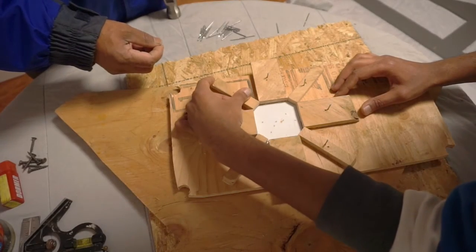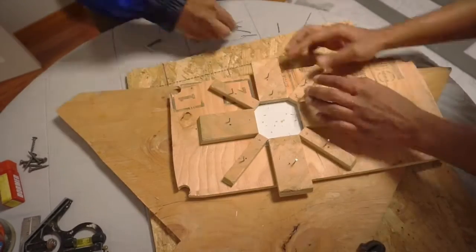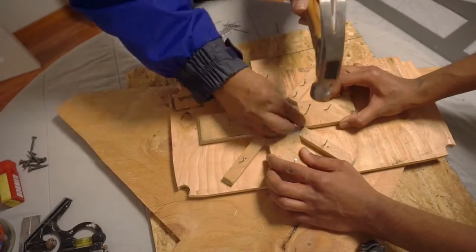We're going to nail down each strip with two nails to make sure the strip is properly secured to the board. This will prevent the strips from moving while we're cutting.